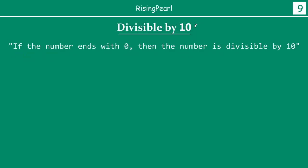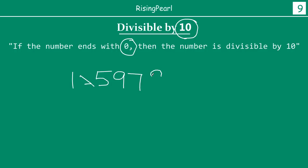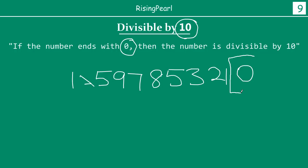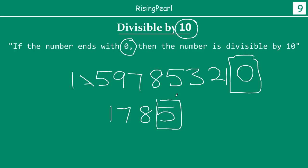The last one is the divisibility test for 10. Simply, if a number ends with 0, we know it is divisible by 10. For example, 1259785320 — if there is a 0 at the very end, this number is divisible by 10. On the other hand, 1795 — is this divisible by 10? It is not, because the last digit has to be 0 for a number to be divisible by 10.